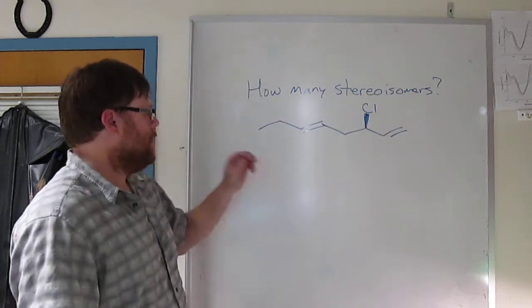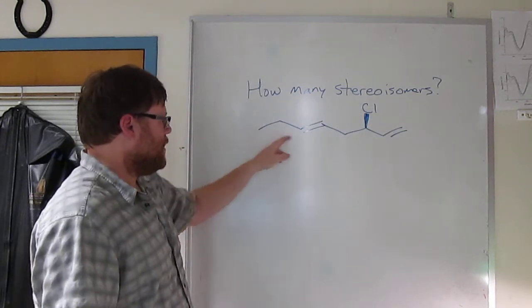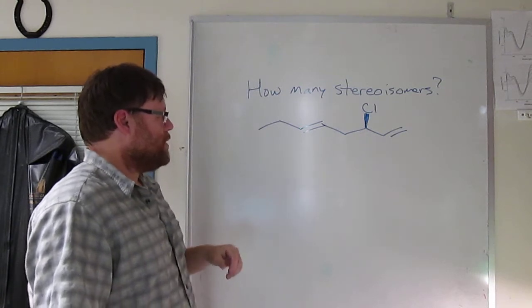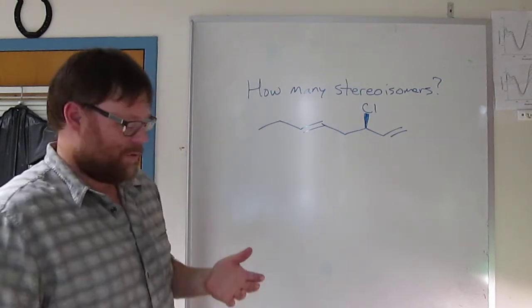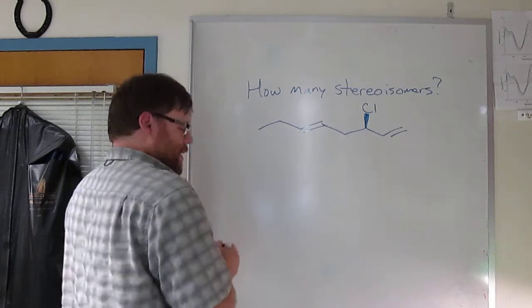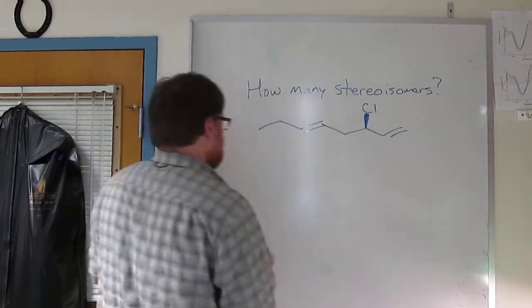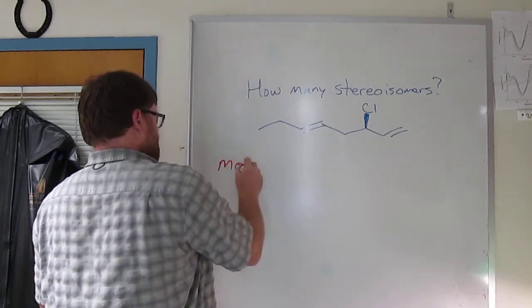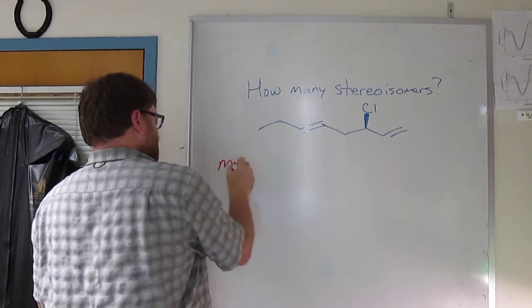There are two alkenes. There's a bunch of sp3 carbons. So again, to answer this question, how many stereoisomers are there, you need to use the equation.